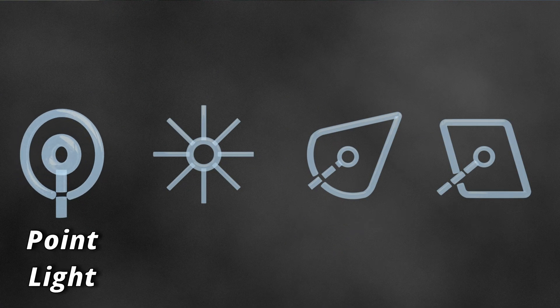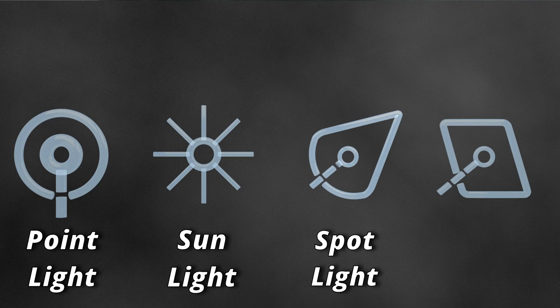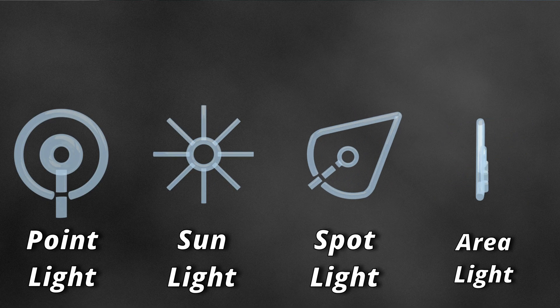Blender has taken all the light we know from the real world and broken it into 4 lamp types: point light, sunlight, spotlight, and area light. I can't believe this software is still free, man.